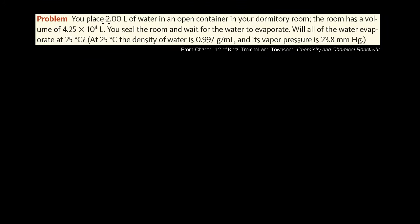So they tell us: you place two liters of water in an open container in your dormitory room. The room has a volume of 4.25 times 10 to the fourth liters. You seal the room and wait for the water to evaporate. Will all of the water evaporate at 25 degrees Celsius? They tell us the density of water is 0.997 grams per milliliter, and its vapor pressure is 23.8 millimeters of mercury. And this is actually the key clue to tell you how to solve this problem.